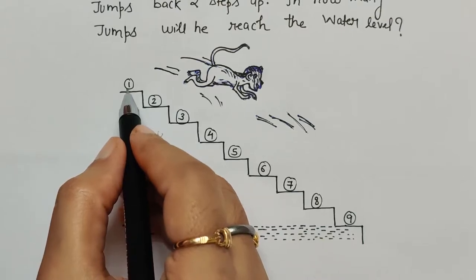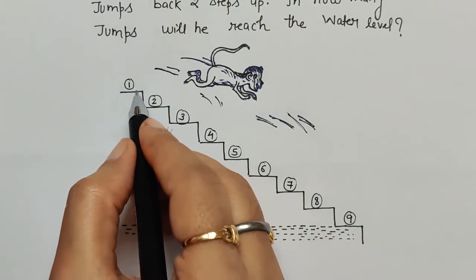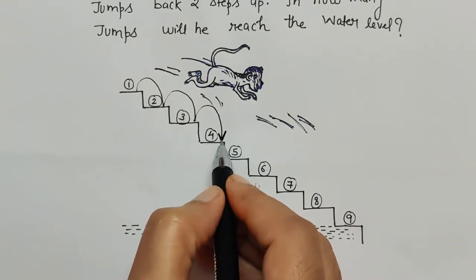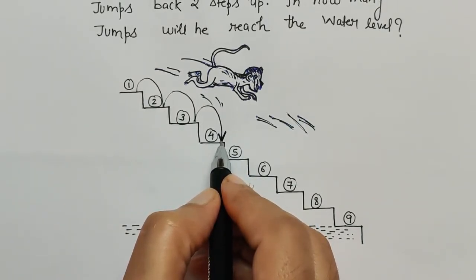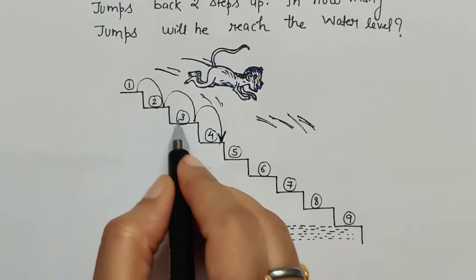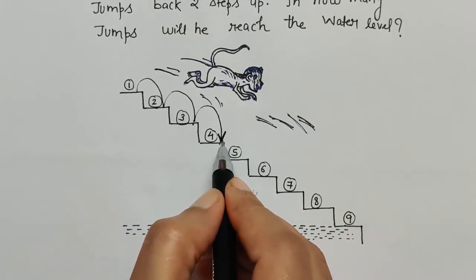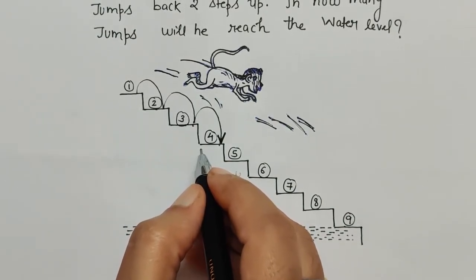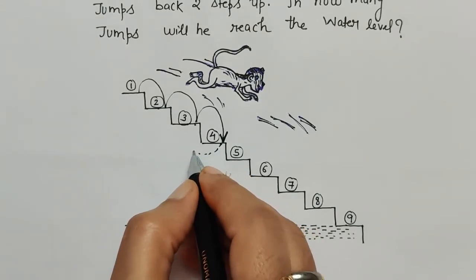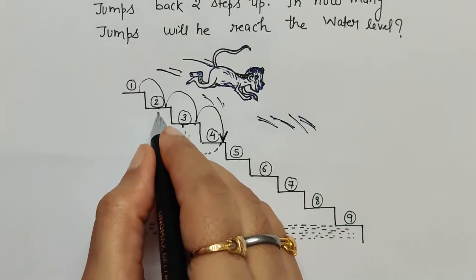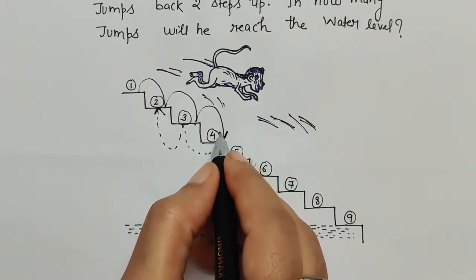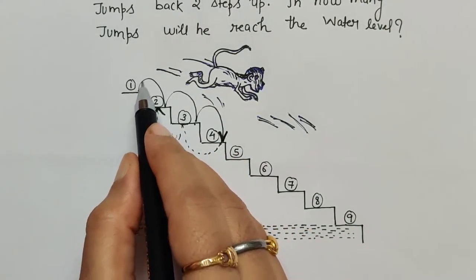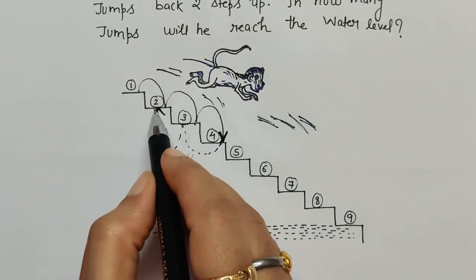Let's visualize this with arrows. From the first step, the monkey jumps downward three steps — one, two, three. This is one downward direction. Now the monkey moves upward — one, two — two steps upward. I'll represent it by a dotted line. At the end we just have to count all the arrows. So: one, two, three downward, then one, two upward.